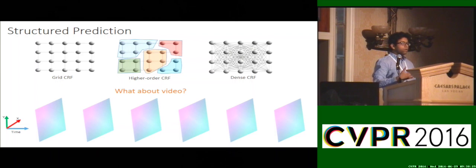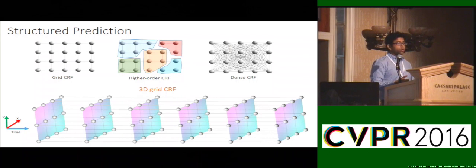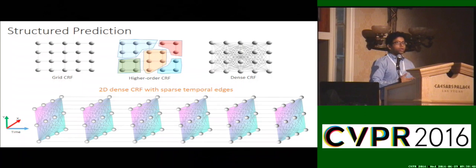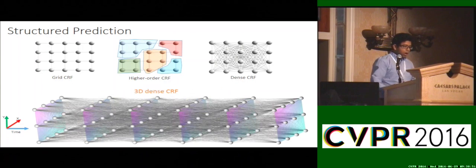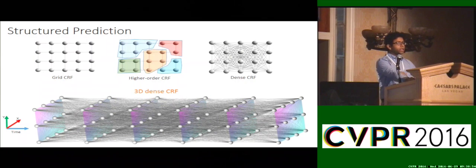Structure prediction for single image has a rich history, starting from grid CRF to high-order CRF and more recently fully connected dense CRFs. So what about video? We could use a 3D grid CRF where each pixel is connected to its local neighbors both spatially and temporally, or a 2D dense CRF spatially with sparse temporal connections. However, in this work we use 3D dense CRF, where each pixel is connected to every other pixel in the whole video. This turns out to be much more efficient and gives much better accurate results.